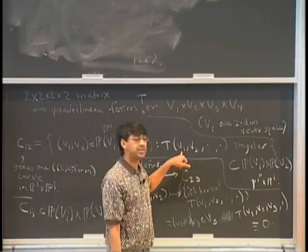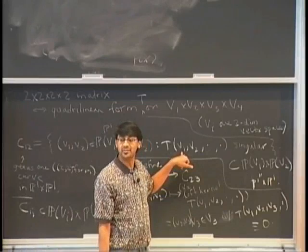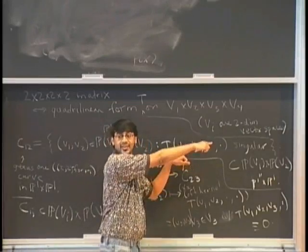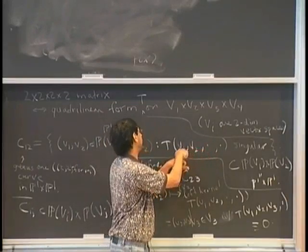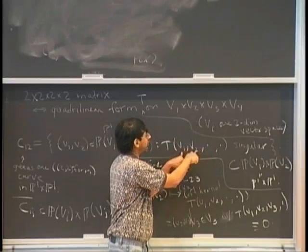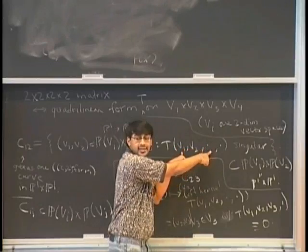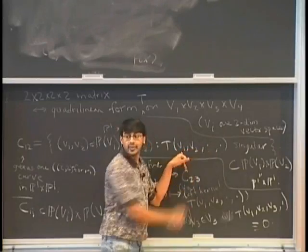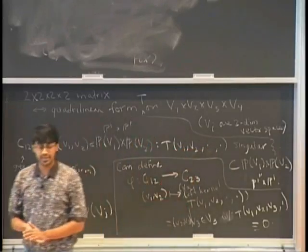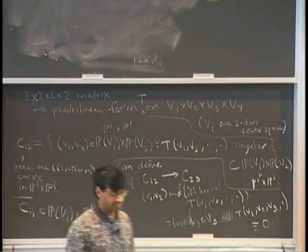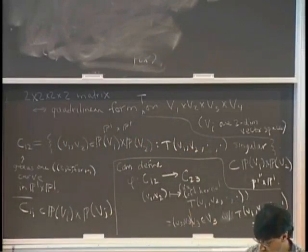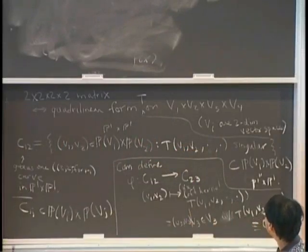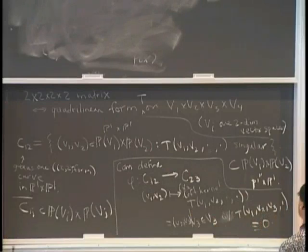So you can define curves in P1 cross P1 cross P1 — C_{123} inside P1 cross P1 cross P1 — by the condition that T(V1, V2, V3, ·) is identically zero. That's another thing you can do. So here are six genus 1 curves in various P1 cross P1's, and they're all isomorphic.